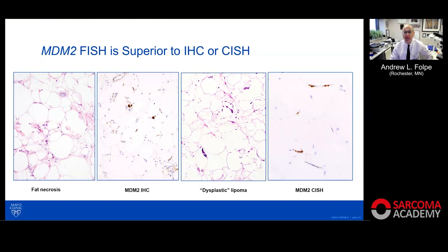Why is FISH better than immunohistochemistry or chromogenic ISH for MDM2? You get fewer false positives. Fat necrosis is the most common entity in the differential of atypical lipomatous tumor, and lipid-laden macrophages of fat necrosis are routinely positive for MDM2 by immunohistochemistry. Additionally, a so-called dysplastic lipoma — really just a spindle cell lipoma showing fat necrosis — will be positive by chromogenic ISH but not by FISH. For this differential, we use FISH, not these other tests.